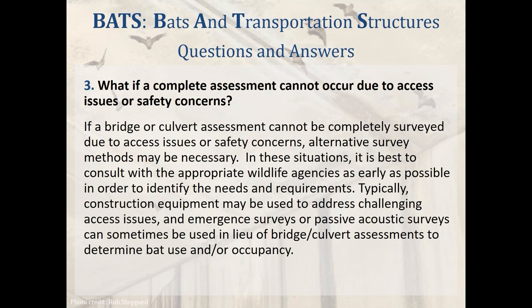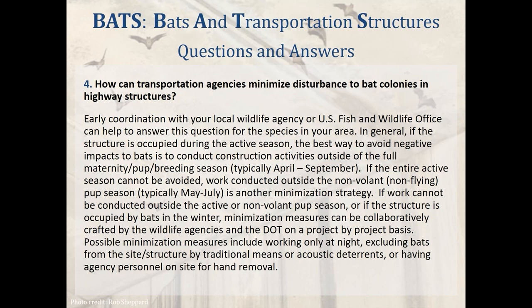Question 3: What if a complete assessment cannot occur due to access issues or safety concerns? If a bridge or culvert assessment cannot be completely surveyed due to access issues or safety concerns, alternative survey methods may be necessary. In these situations, it's best to consult with the appropriate wildlife agencies as early as possible to identify the needs and requirements. Typically, construction equipment may be used to address challenging access issues, and emergence surveys or passive acoustic surveys can sometimes be used in lieu of bridge/culvert assessments to determine bat use and/or occupancy.